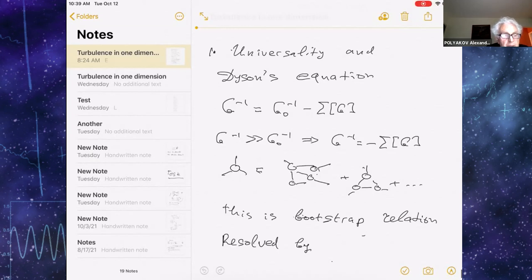And so all information about the bare Green function, which means interactions, information about the small details, if you perturb a little bit the small details, if you perturb a little bit this bare Green function, you will not change the critical behavior.